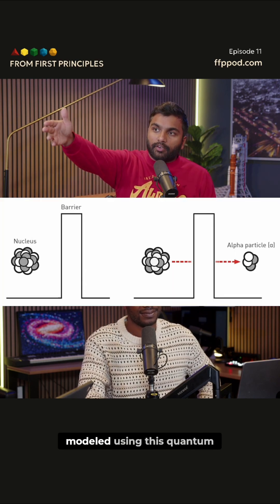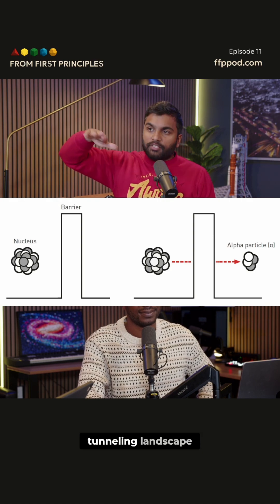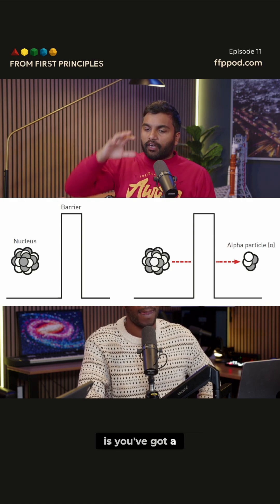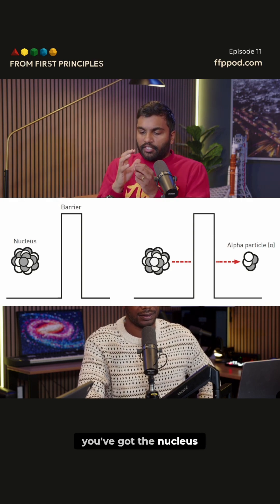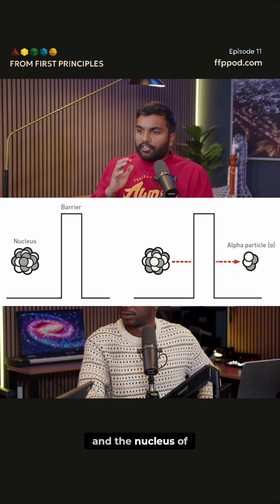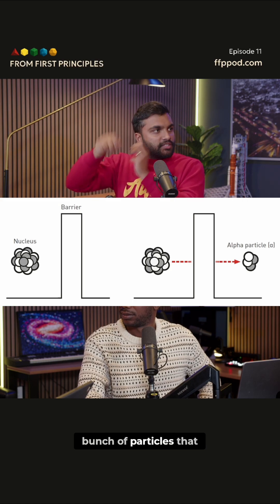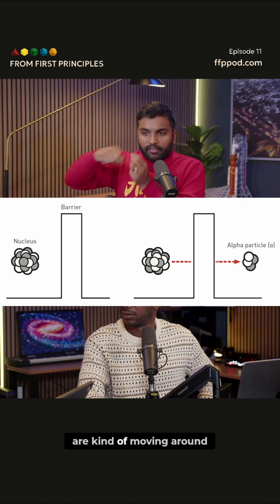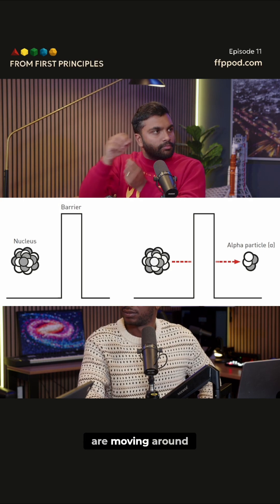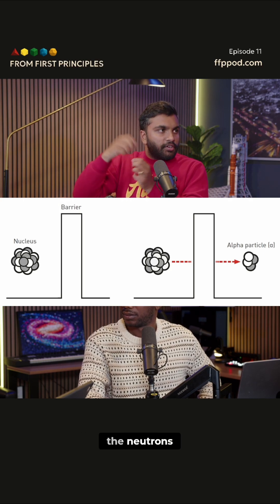That can actually be modeled using this quantum tunneling landscape. You can imagine you've got the nucleus of the atom, and the nucleus of the atom has a bunch of particles that are kind of moving around. Each of these nucleons are moving around — either the protons or the neutrons.